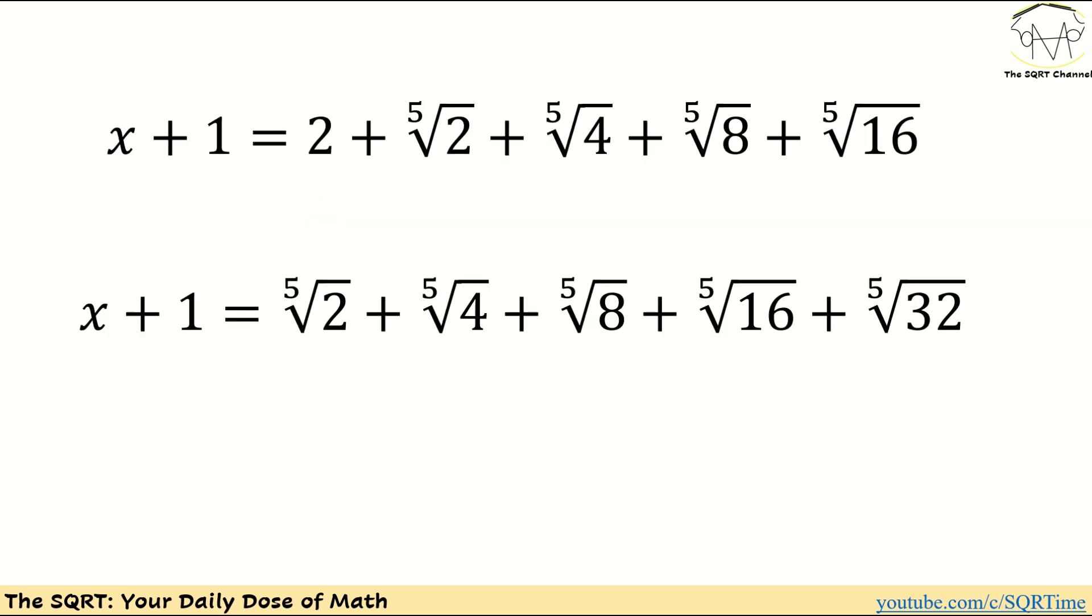Now based on this we are going to do another trick. Basically I'm going to write two as what you see here. The thing that I have here is basically first of all we have 32 equals to two to the power of five, and if we take the fifth root of both sides.